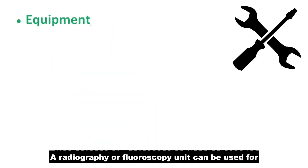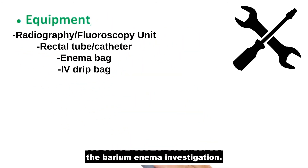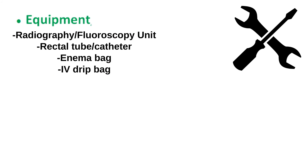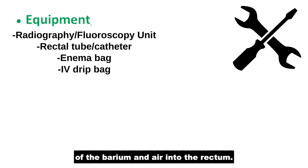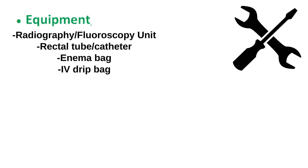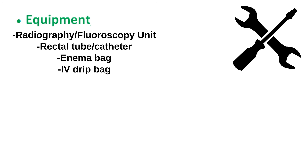A radiography or fluoroscopy unit can be used for the barium enema investigation. A rectal tube or catheter is used for administration of the barium and air into the rectum, and an enema bag suspended from an intravenous drip pole can be used to contain the barium sulfate.